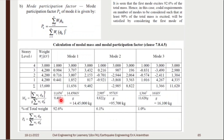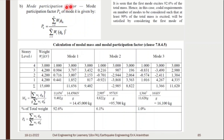Next step: add one more row called P_k, the modal participation factor. Using the values of W × φ, take the summation and divide the two values — summation(W × φ) divided by summation(W × φ²) — to get the modal participation factor P_k.